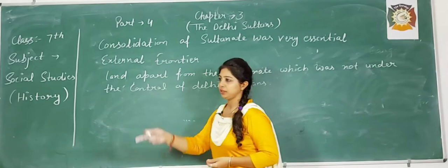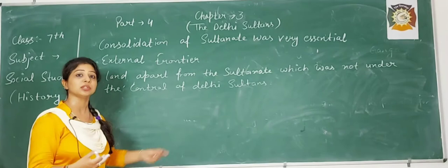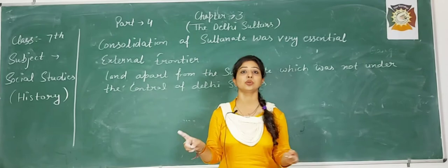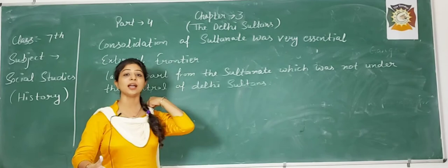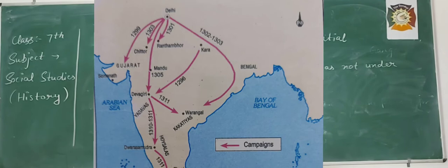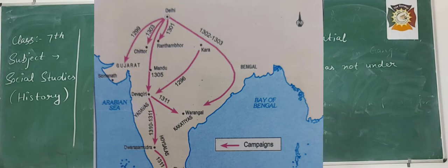Internal frontier was the land between two garrison towns; external frontier was the land beyond the garrison towns. For example, they were ruling over Delhi and adjacent cities, but had no major control on the southern part. Then these three rulers started expanding their empire to the southern part. In this map we can see Alauddin Khilji started ruling over the southern part — he went to Chittor, Warangal, and Gujarat.